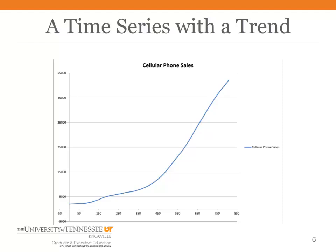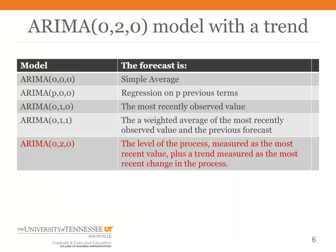You can also see that the trend changes over time, so you certainly would not want to use something like a regression line to estimate that trend, because it needs to adapt just like the level of the process adapts in the models we've looked at so far. So we're going to introduce the ARIMA 020 model — a model that has a trend.